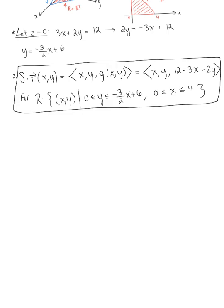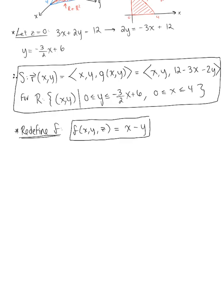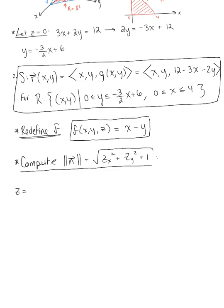We are ready to set up the surface integral. We want to redefine function F in terms of just X and Y. Our integrand F of XYZ is defined as X minus Y — since there's no Z, no reparametrizing is needed. The next thing we need to do is compute the magnitude of our normal vector: the square root of (∂Z/∂X)² plus (∂Z/∂Y)² plus 1. We'll use our explicit description Z equals 12 minus 3X minus 2Y.